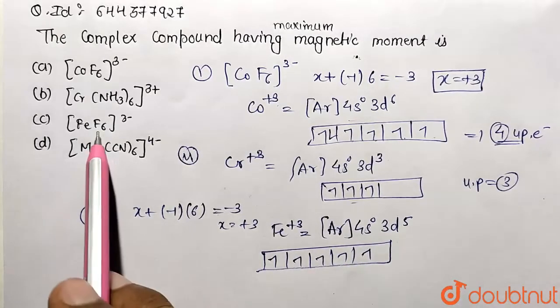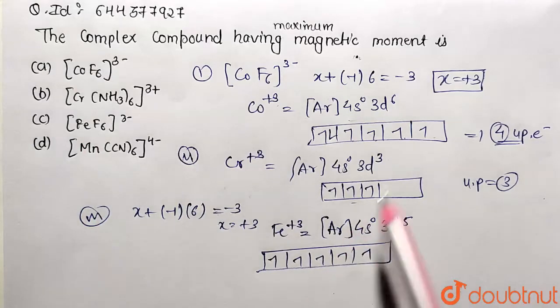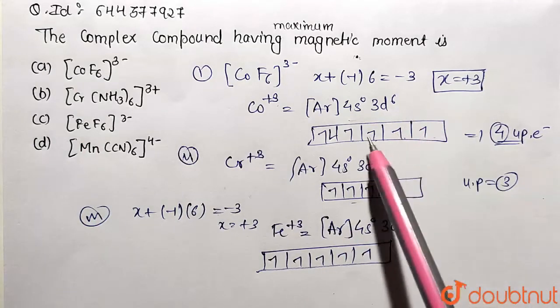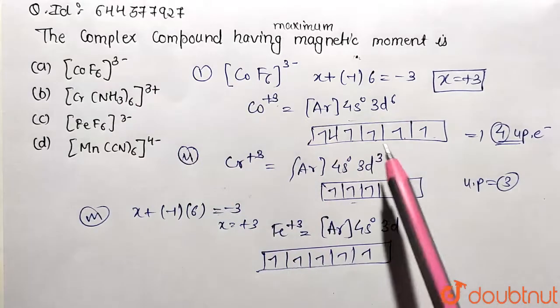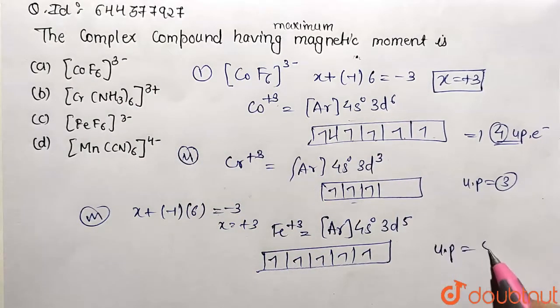Now you see that here the ligand type is weak field, so it's not going to cause any pairing, just like the previous case. The first was also fluoro, a weak field ligand, so it also doesn't cause pairing. Here, unpaired electrons turn out to be 5 in number.